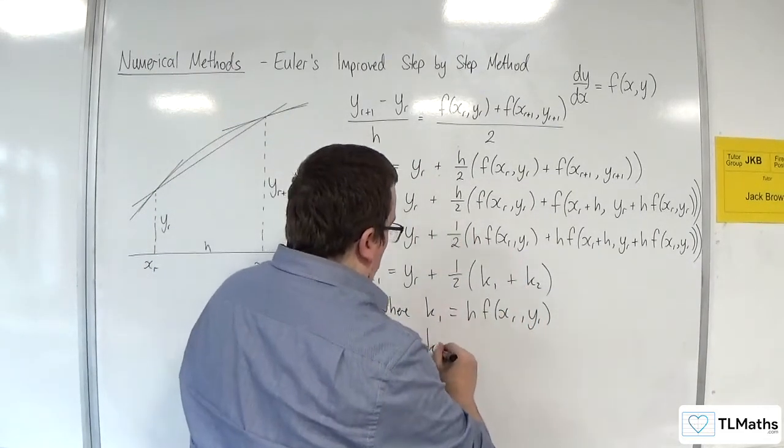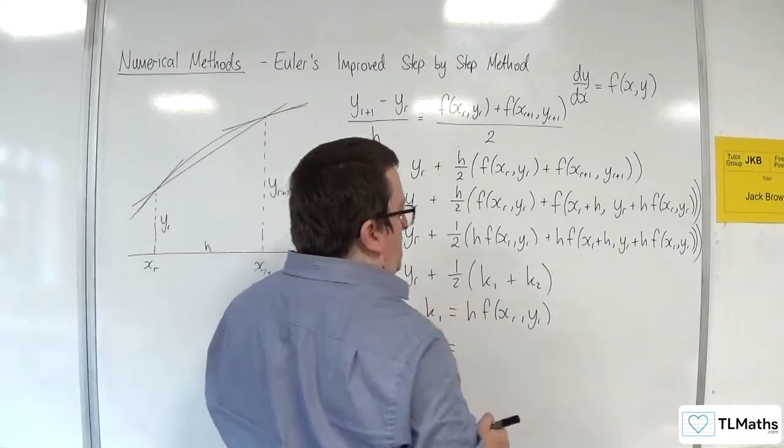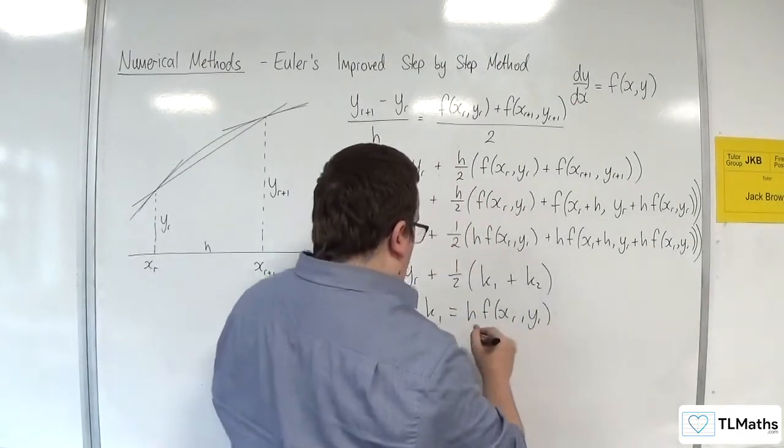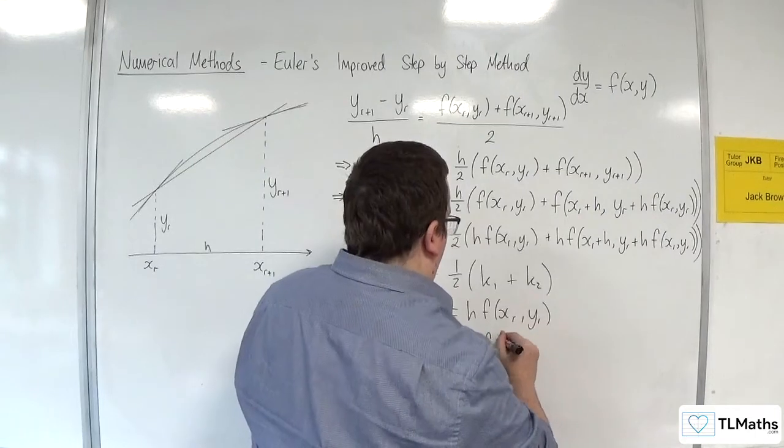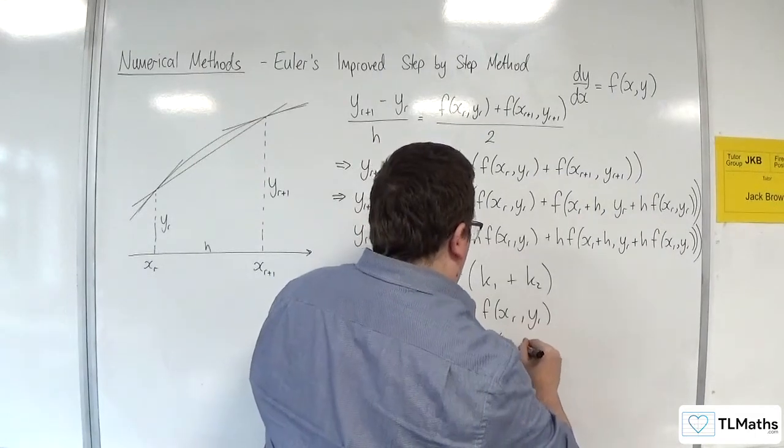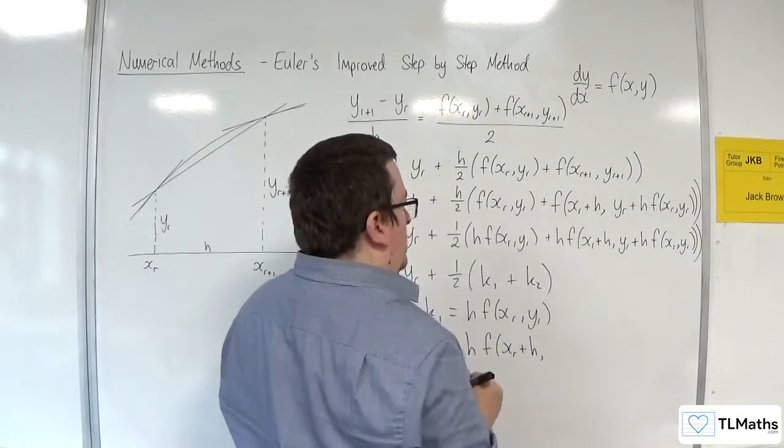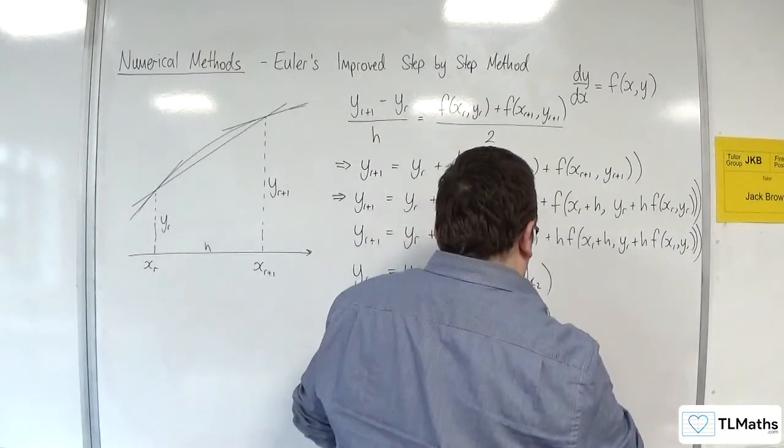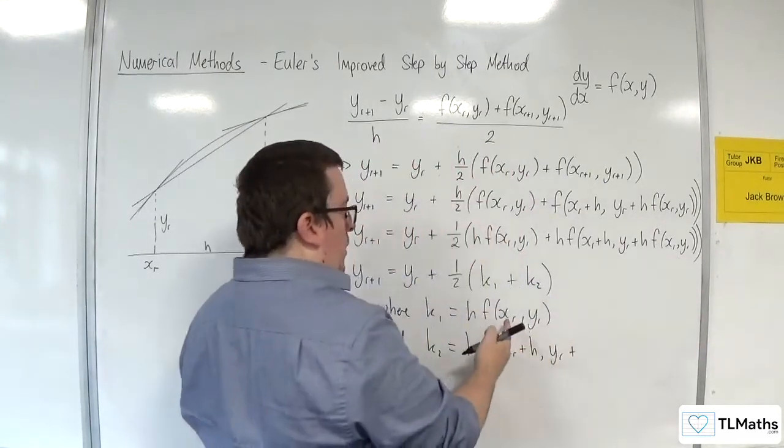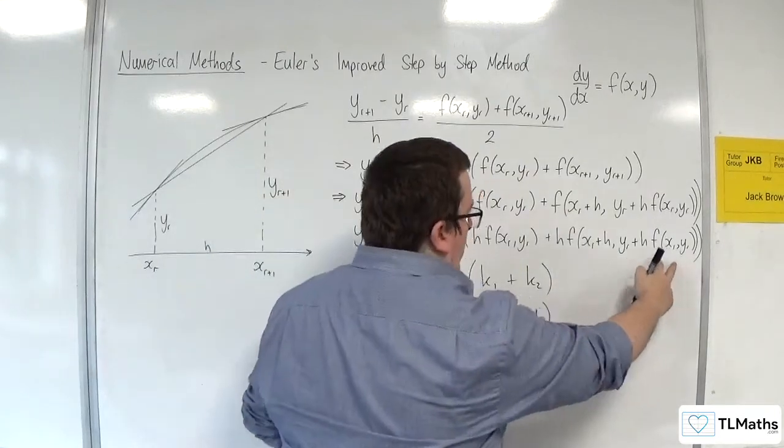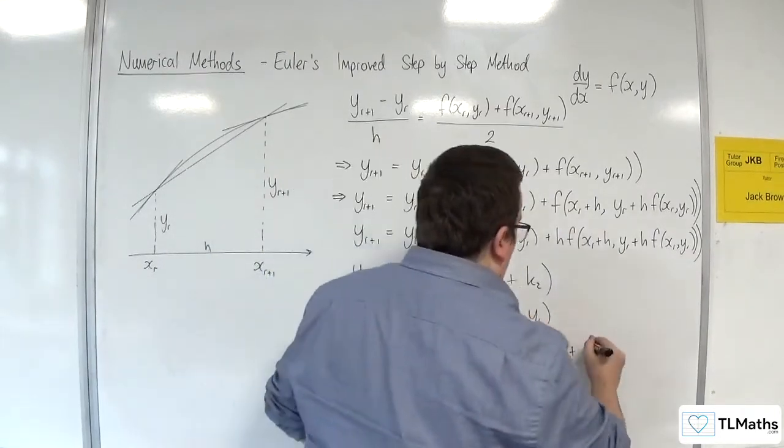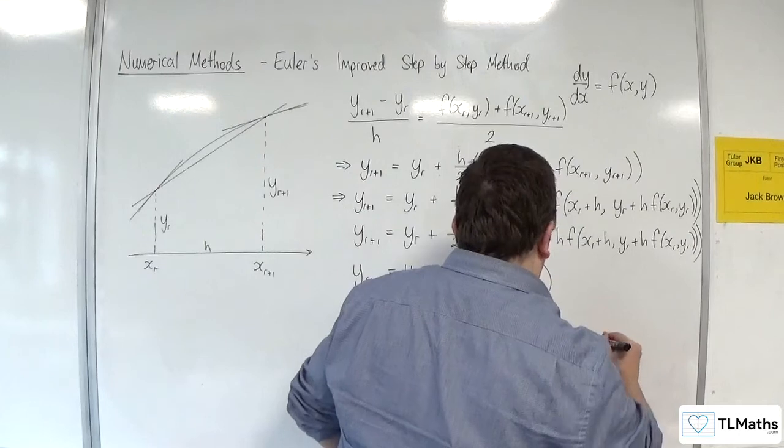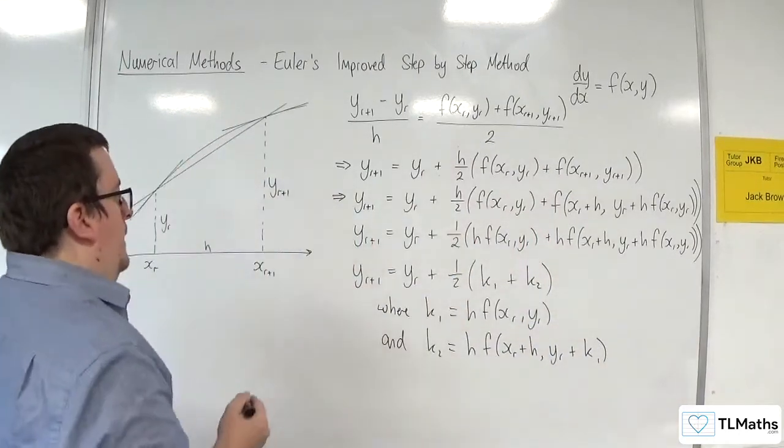And K2 is equal to all of this, so H, F of XR plus H, YR, plus, now the H, F of XR, YR, is this. So, I can write that as K1 in there.